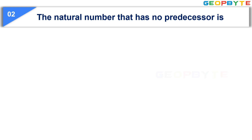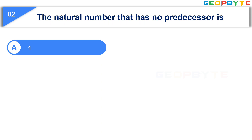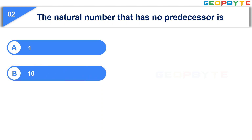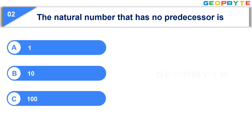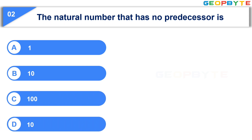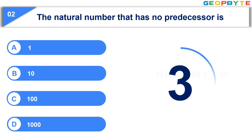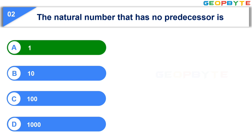The natural number that has no predecessor is. Option A: 1. Option B: 10. Option C: 100. Option D: 1000. Your time starts now. Your time is up and the correct answer is Option A, 1. Now let us see the third question.